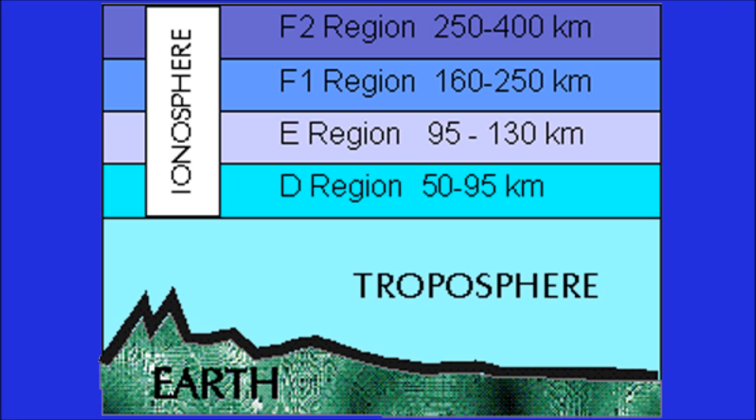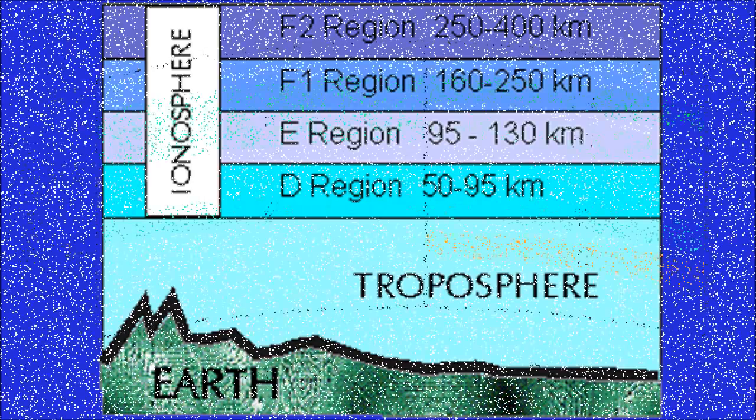F1 and F2 are jointly called the F-region; in fact, they combine into one F-layer at night. The F-region is the most important for long-distance HF radio communications. It retains its ions longer than any other layer and remains ionized all night, although not as densely. Its intense daytime ionization refracts high frequencies, but at night will often let them pass through. Low frequencies below 10 to 15 MHz are refracted back to Earth at night.